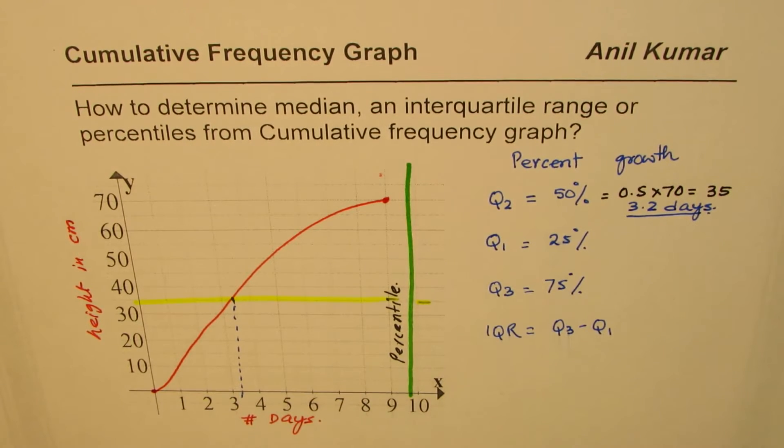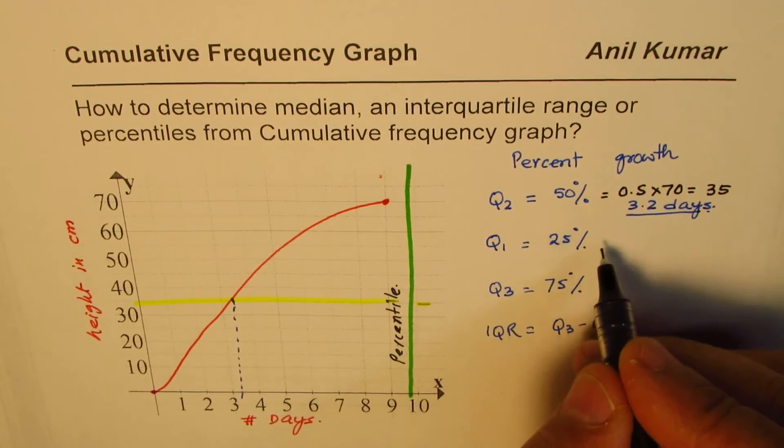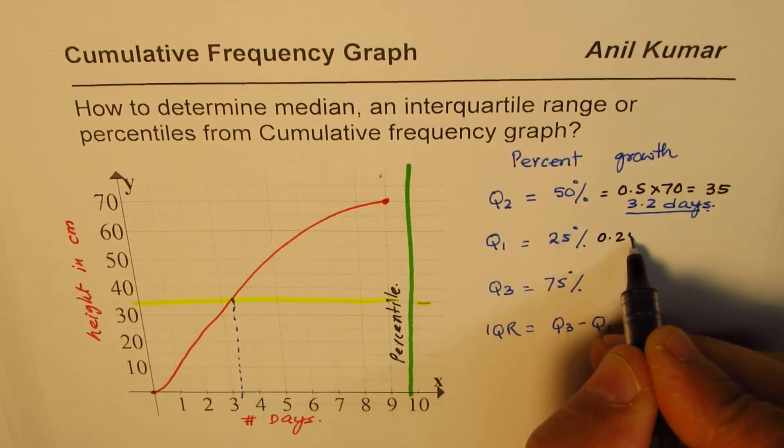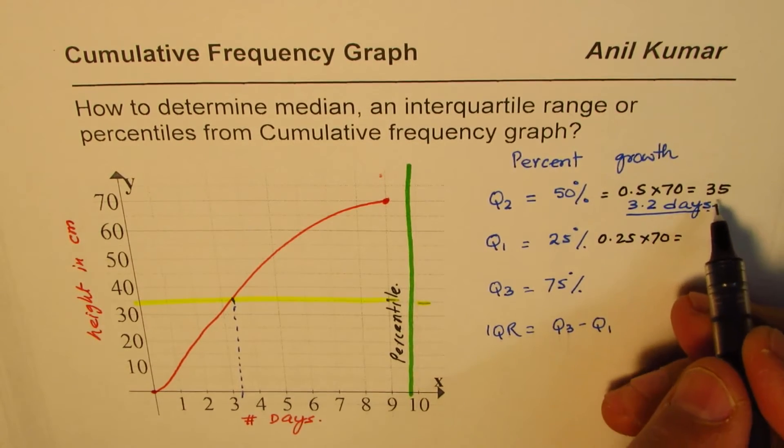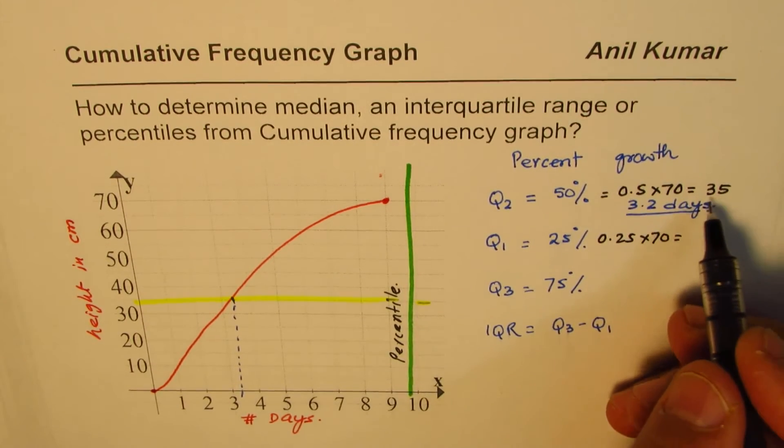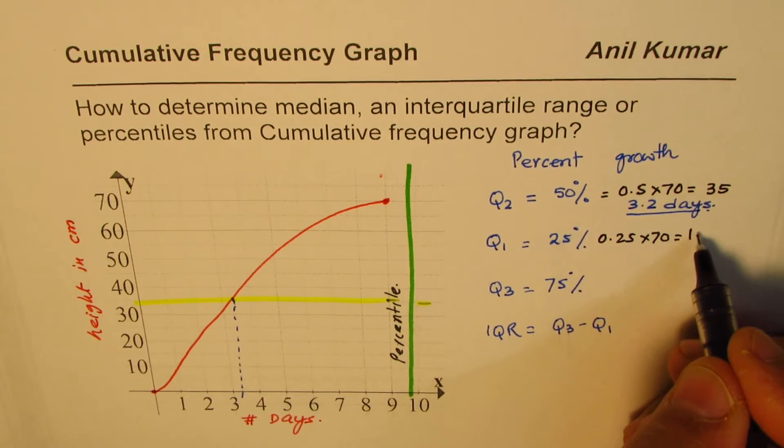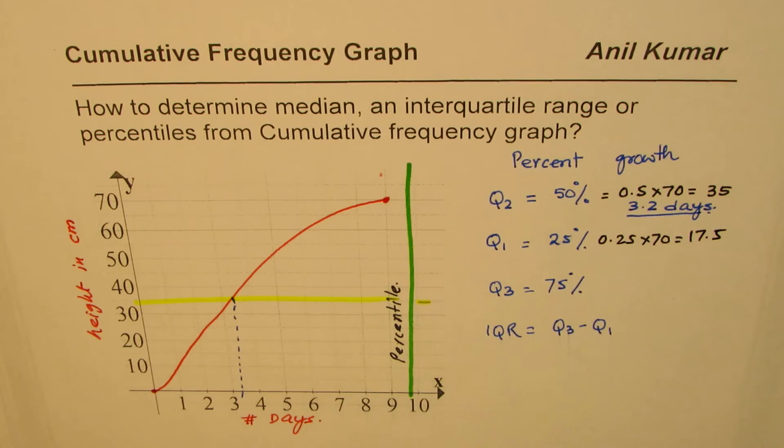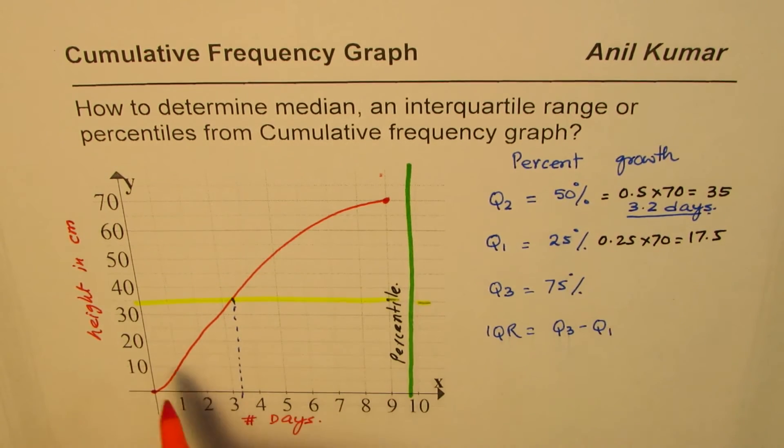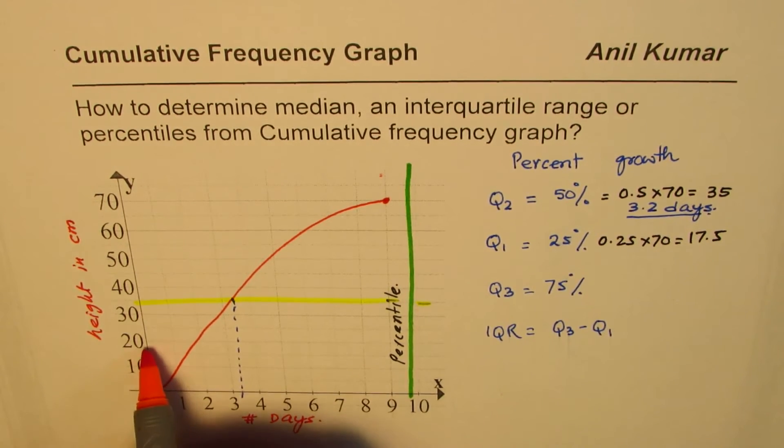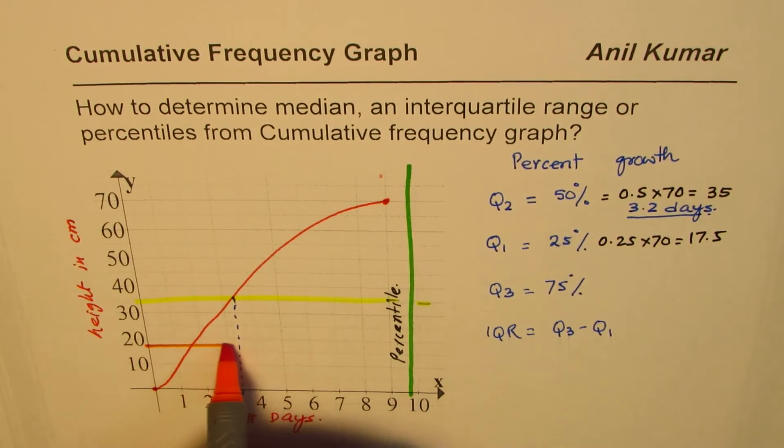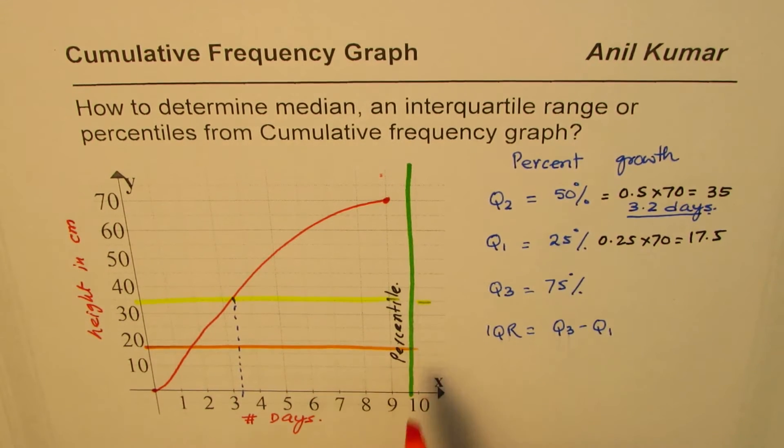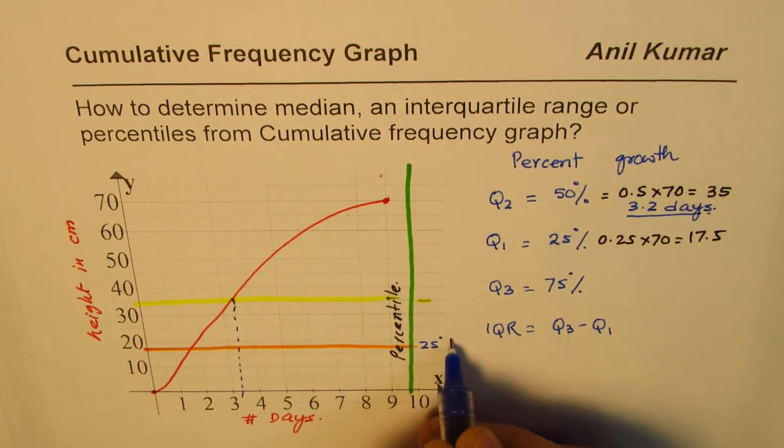Q1, the 25%, is half of this right. 25% of 70 is half of 35 so it is 17.5. So for 17.5, 25% quartile 17.5. This is 15, let's say this is 17.5. We draw another line to indicate the 25% mark. So that becomes 25% mark.